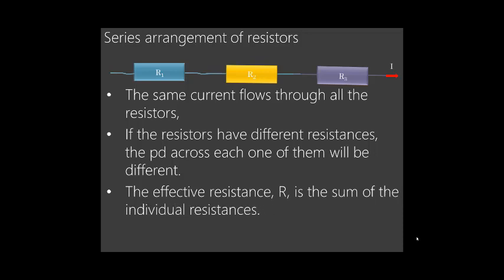The effective resistance — or total resistance — for resistors in series is the sum of the individual resistances. Don't forget: R = R1 + R2 + R3. If there are four resistors, R = R1 + R2 + R3 + R4. Just add the individual resistances to get the effective resistance.